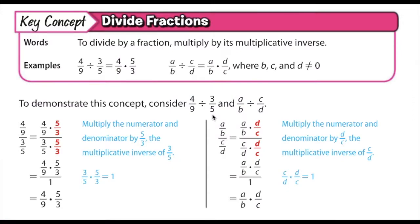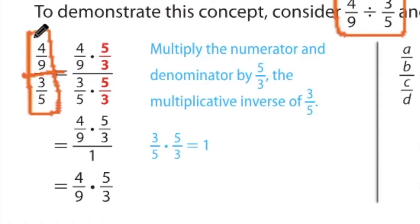Please take a moment to review the key concept of dividing fractions. In words, to divide a fraction, you multiply by its multiplicative inverse. And to demonstrate this concept, I want you to take a moment to look at this example here, both algebraically and with the numbers here. And just consider that 4 ninths divided by 3 fifths could look many ways, and this is one way that it could look. It looks kind of silly because we have two fractions inside of one fraction. But this is actually explaining why you do multiply by that multiplicative inverse.